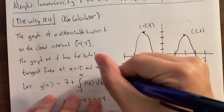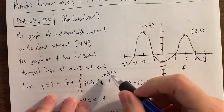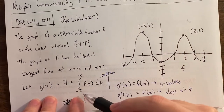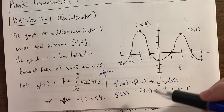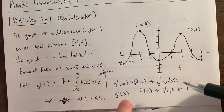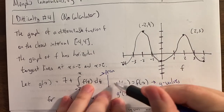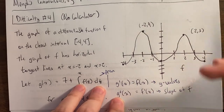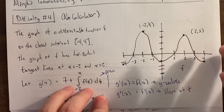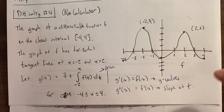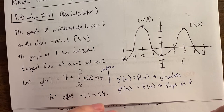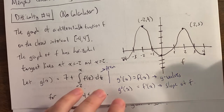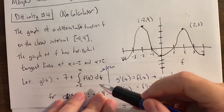So g is going to be area — specifically the area between any number we want and negative 2 — and then we add 7. G prime equals f, which gives y values. I also like to take g double prime of x because they might ask for those values. G double prime of x is f prime of x, which is the slope of this graph. So g prime equals f is positive means g is increasing; g prime equals f is increasing means g is concave up.